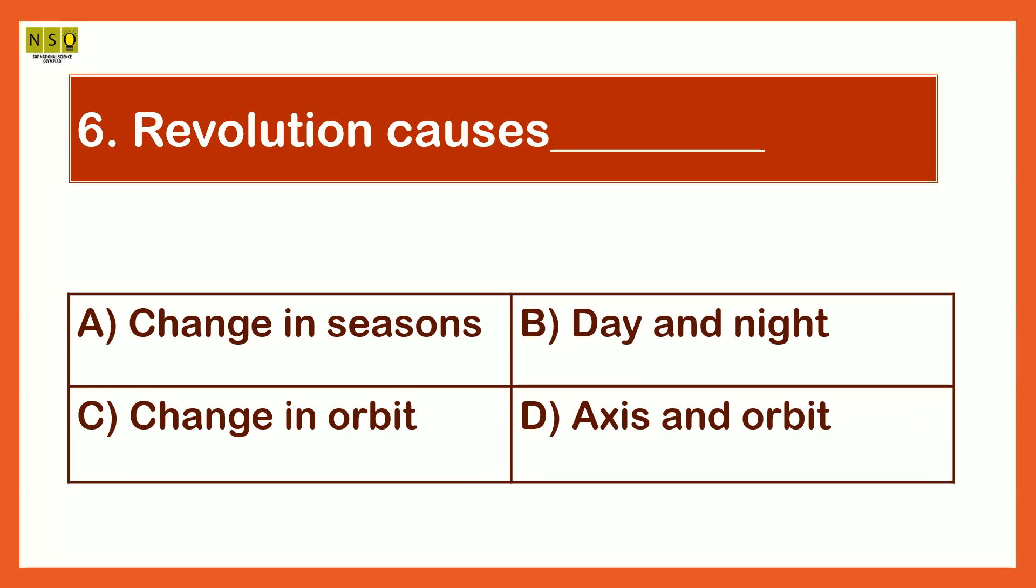Revolution causes the options are Change in Seasons, Day and Night, Change in Orbit, Axis and Orbit. The answer is Change in Seasons. Revolution causes Change in Seasons.